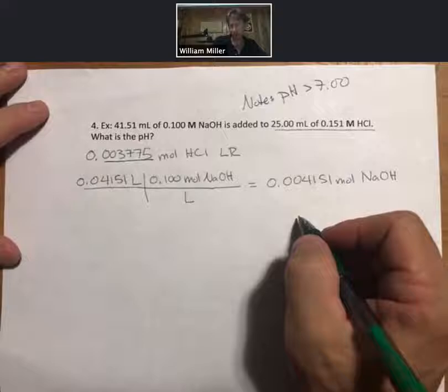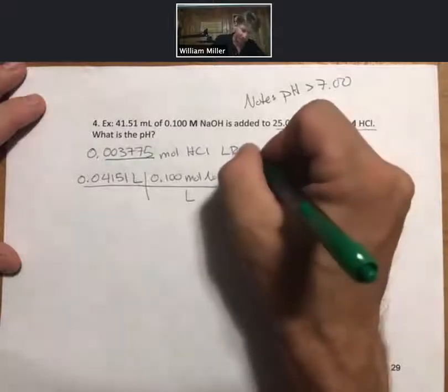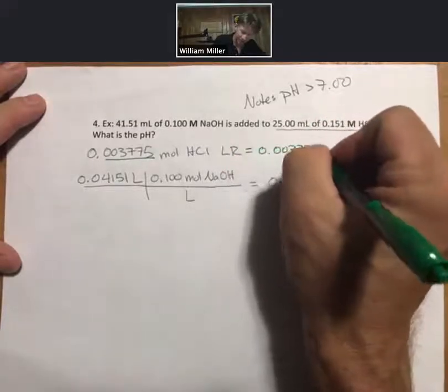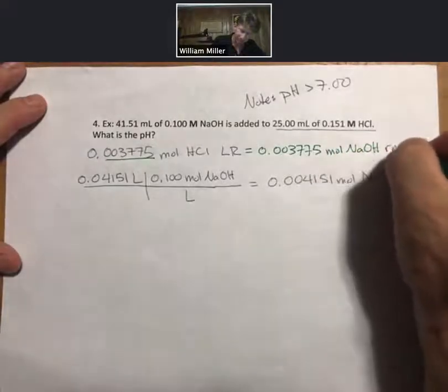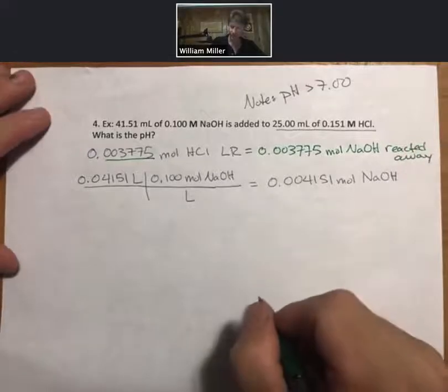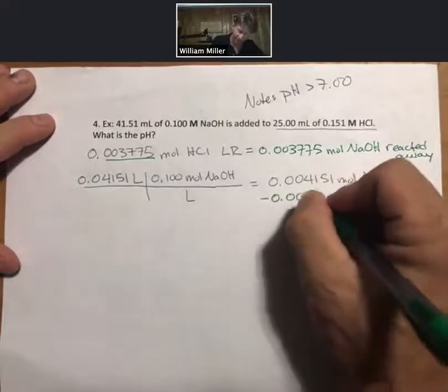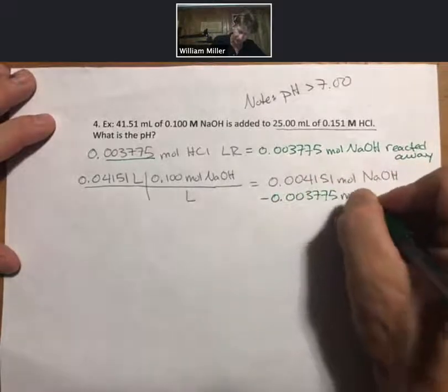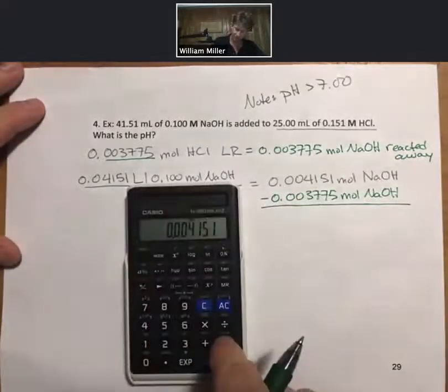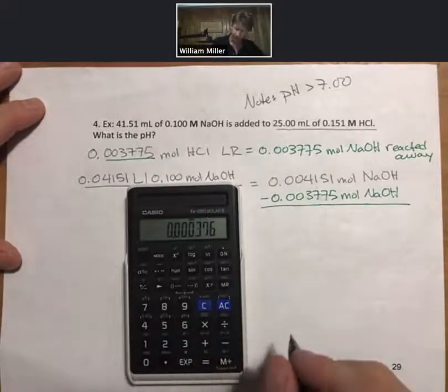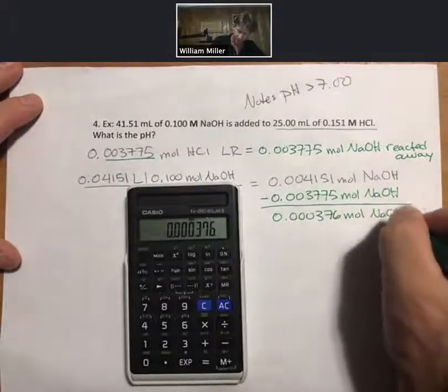Because there's one to one to one to one stoichiometry like the similar or previous problems, we know that this moles of HCl for our limiting reactant equals the same number of moles of sodium hydroxide that are reacted away. And therefore, if we know the starting sodium hydroxide moles, we know how many are reacted away. We can then find our moles left over. 0.000376 moles sodium hydroxide left over.